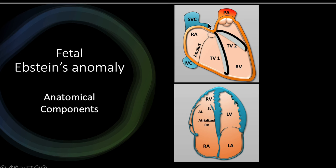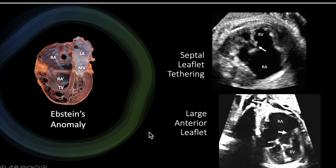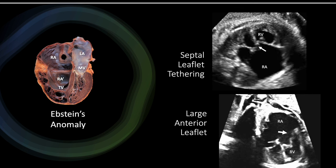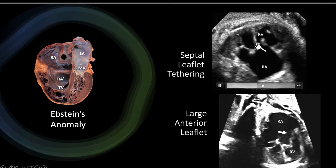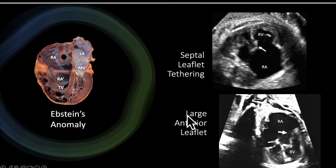In Ebstein anomaly, the abnormality is that the anterior leaflet moves down and the entire orifice moves down toward the right ventricle, atrializing a large part of it. The normal tricuspid valve structure should be higher up, but it moves down, atrializing a very large portion of the right ventricle. There is also thinning of the right atrial wall, which complicates the issue. The septal leaflet is not properly delaminated from the septum — it gets tethered there.